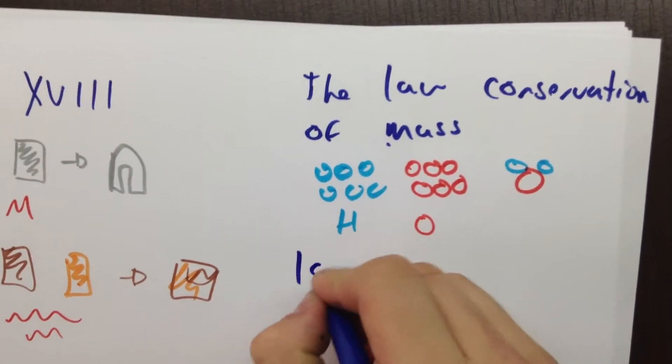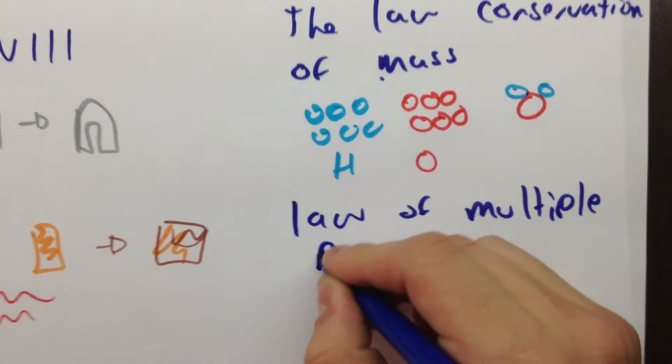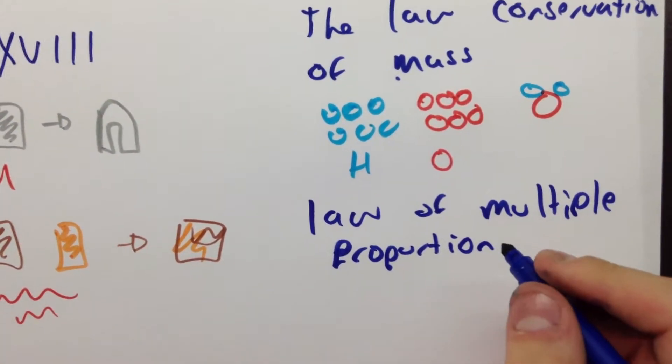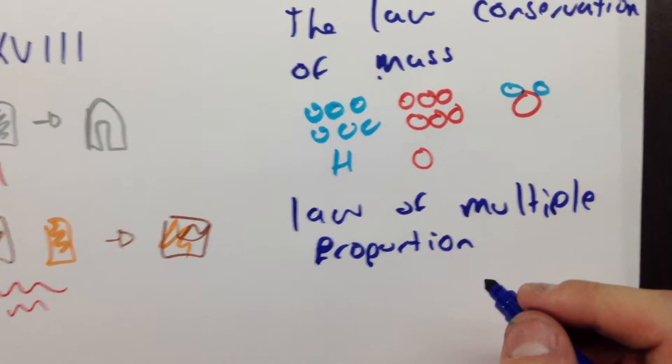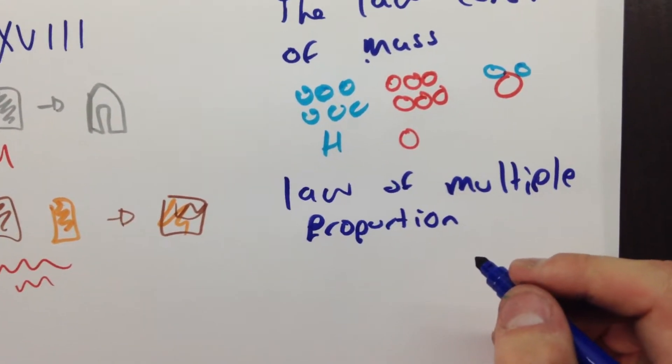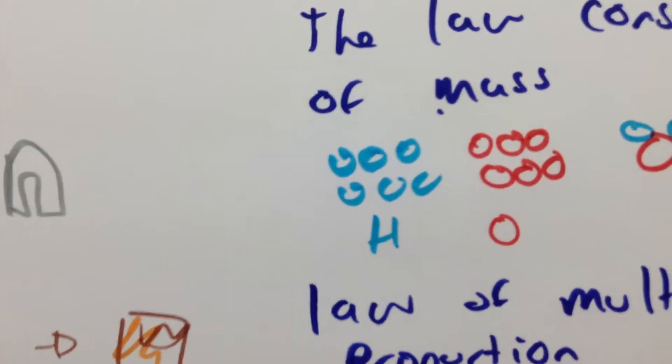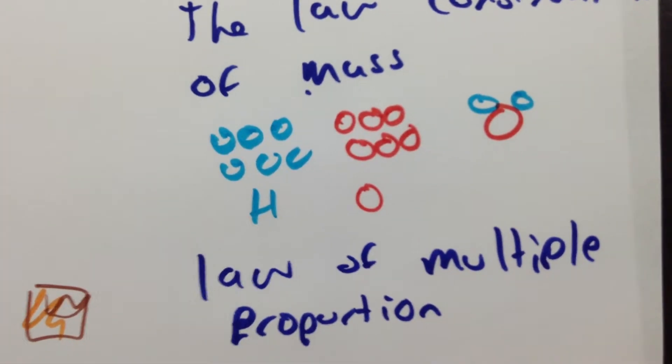Also, we have the law of multiple proportions that states that if two or more different compounds are composed of the same two elements, then the ratio of the masses of the second element combined with a certain mass of the first element is always a ratio of small whole numbers.